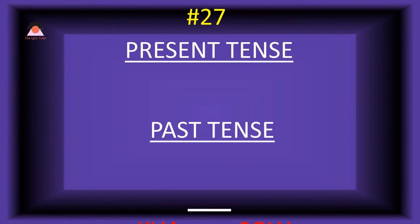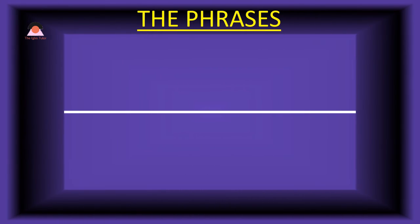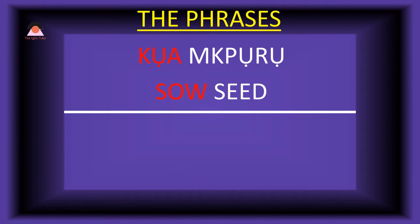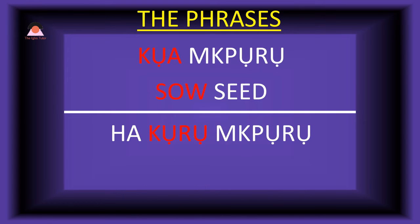Word number twenty-seven: 'koa,' meaning 'sow.' The past tense of koa is 'koro,' meaning 'sowed.' Present tense phrase: 'koa m'boro' — sow seed. Past tense: 'ha-koro m'boro' — they sowed seed.